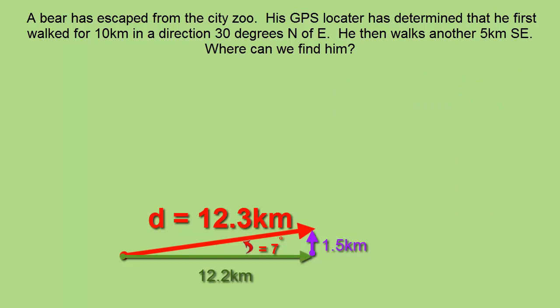Putting it all together gives us a final displacement of 12.3 kilometers at 7 degrees north of the east line for the bear's final displacement.